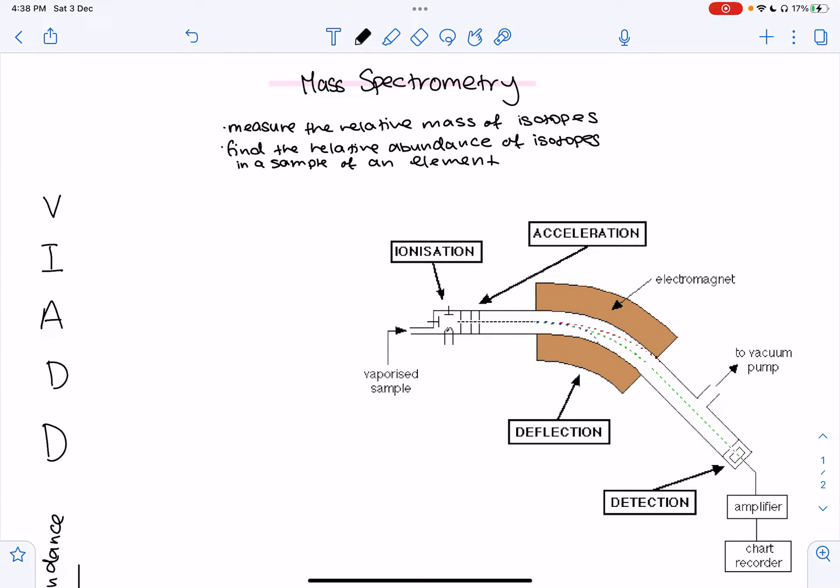Mass spectrometry can be used to measure the relative mass of isotopes and find the relative abundance of isotopes in a sample of an element.